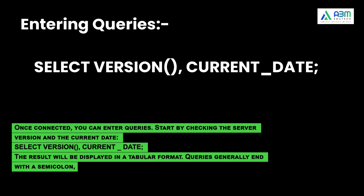Once connected, you can enter queries. Start by checking the server version and the current date: SELECT version(), current_date. The result will be displayed in a tabular format. Queries generally end with a semicolon.